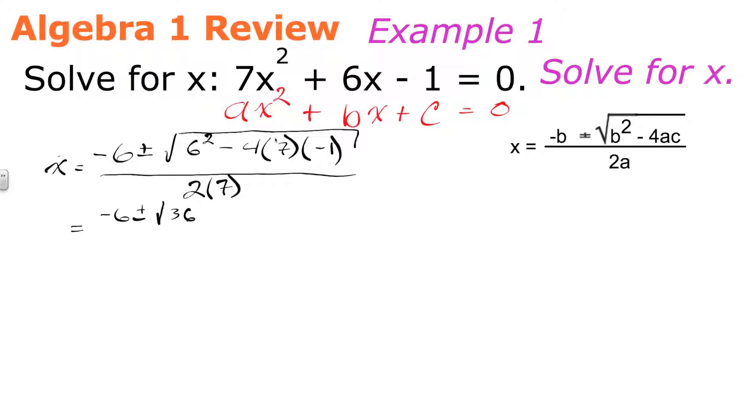Now, here, we're going to multiply all this out, and we're going to treat this as a negative 4. Negative 4 × 7 is negative 28. And negative 28 × negative 1 is a positive 28. And that's going to be all over 14.